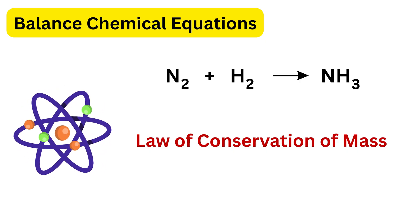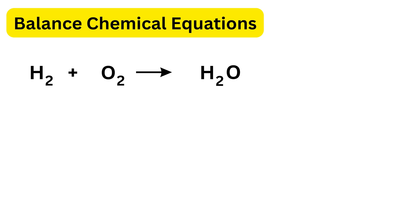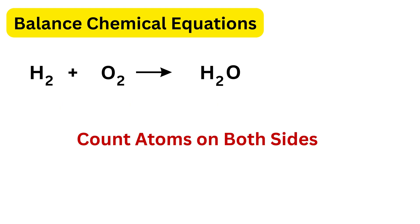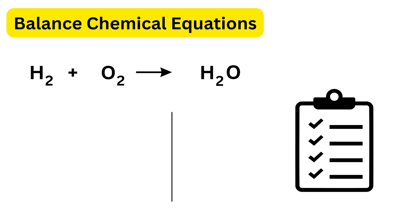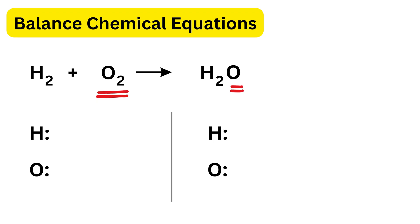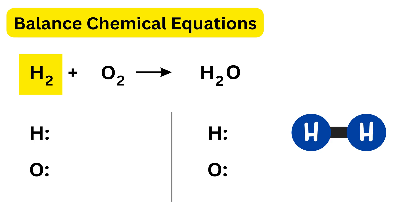Our first problem is hydrogen reacting with oxygen to form water. This is the unbalanced equation. Step one is to count atoms on both sides. First, make a list of all the elements present: we have hydrogen (H) and oxygen (O). On the left, we have one H₂ molecule.